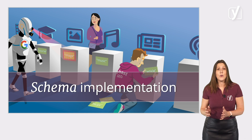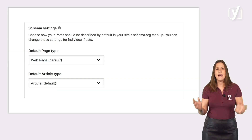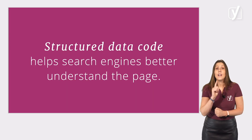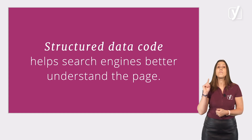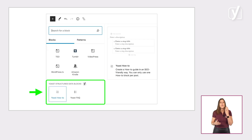Smart, right? Time flies when you're having fun — we've already discussed quite a lot of features. Did you know that Yoast SEO also does a ton of stuff in the background to make sure that search engines can find your content? One of the most significant innovations at Yoast that we are super proud of is our schema implementation. When you use Yoast SEO, we automatically add structured data code to your pages. This code helps search engines better understand the page, and if they can understand your content better, they will be able to display it better too. If you are using the block editor, you can even use our special structured data blocks.